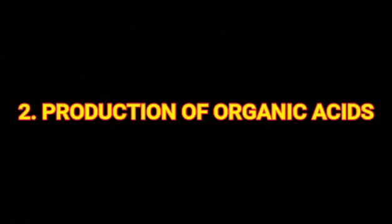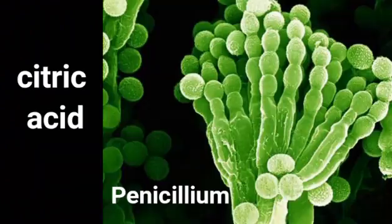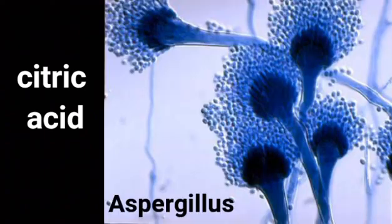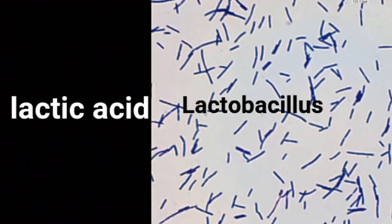Production of Organic Acids. Several microbes are used in the commercial production of a variety of organic acids. Citric acid is manufactured by fermenting sucrose and molasses by species of Penicillium and Aspergillus. Acetic acid is produced by fermenting sugary solutions. Lactic acid is produced by the fermentation of sugars by Lactobacillus and Streptococcus lactis.